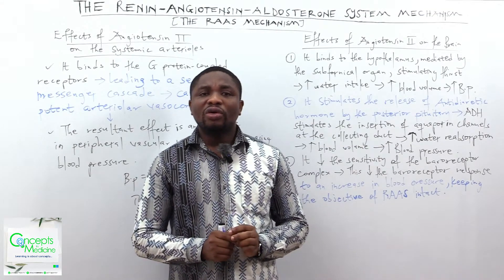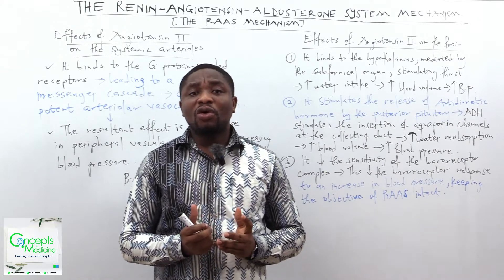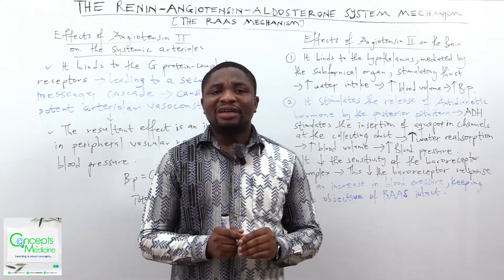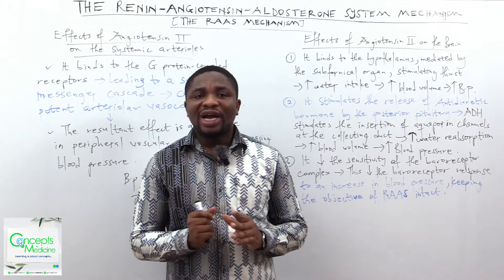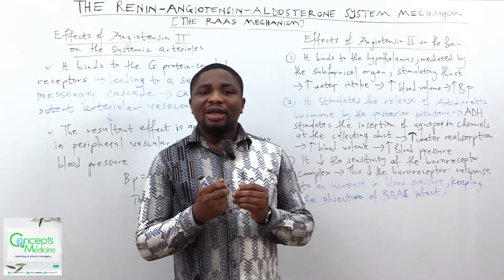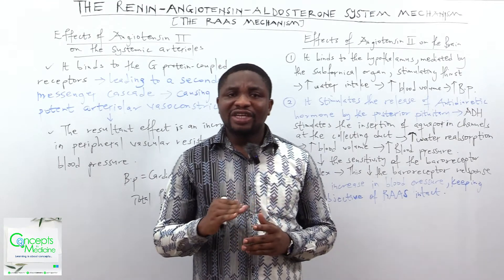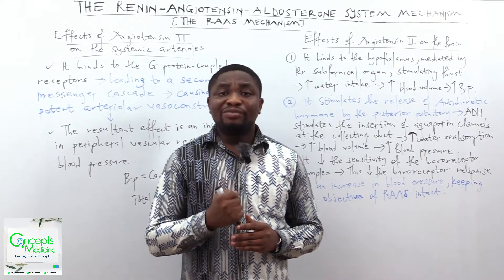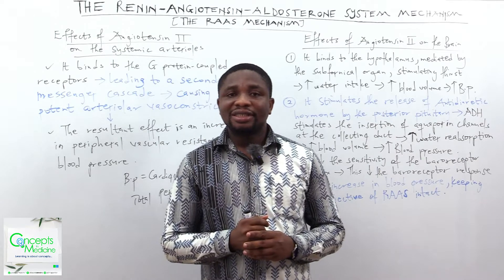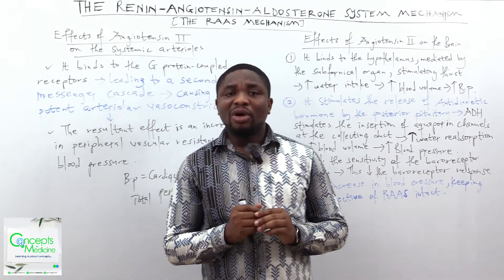The final effect of angiotensin-2 on the brain is that it decreases the sensitivity of the baroreceptor reflex, causing a decrease in the baroreceptor response to increasing blood pressure, keeping the sole objective of RAS intact. The objective of the renin-angiotensin-aldosterone system is to always maintain and increase blood pressure, ensuring it is kept at a threshold value. Diminishing the baroreceptor response to rising blood pressure keeps the RAS mechanism objective intact.